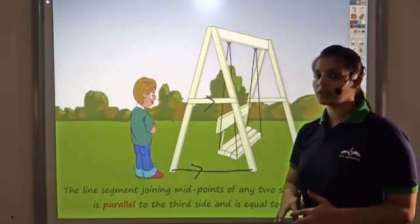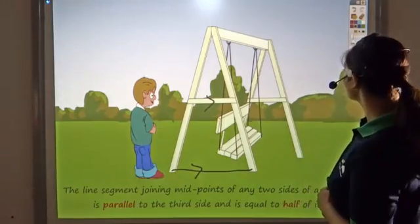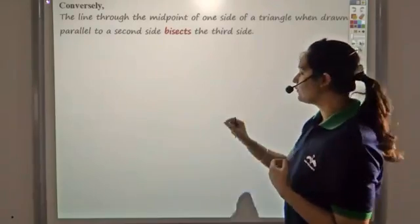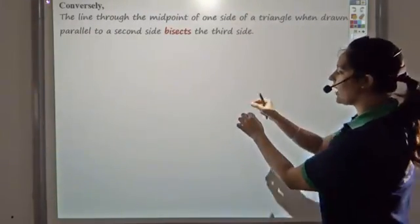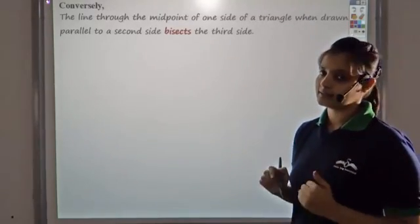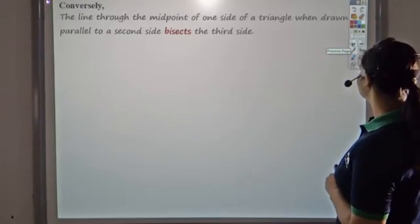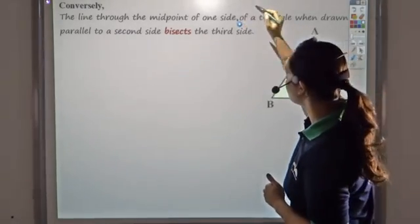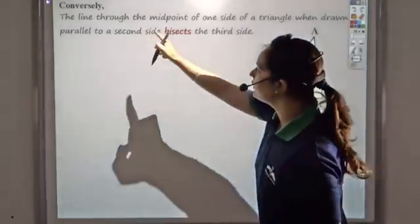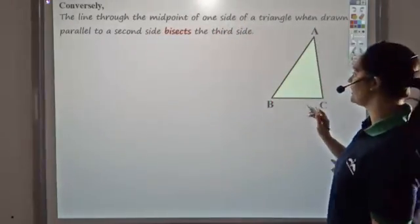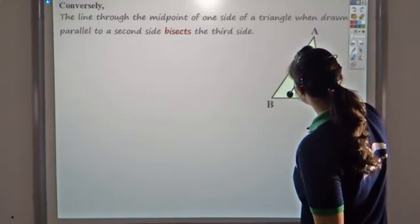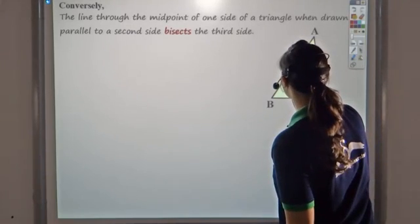Now let us try to prove the converse of this theorem. The converse states that if a line is drawn from the midpoint of one of the sides and is parallel to the second side, then it should bisect the third side. For that, let us first take a triangle. Let's say this is our triangle ABC. We know that the line through the midpoint of one side — let's take side AB and take its midpoint.